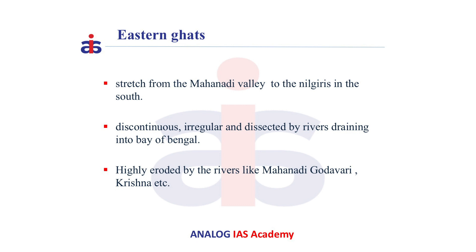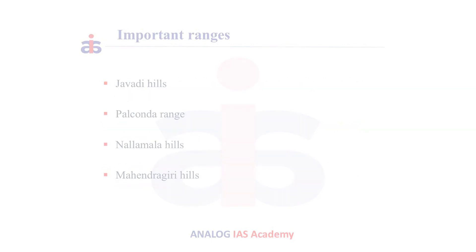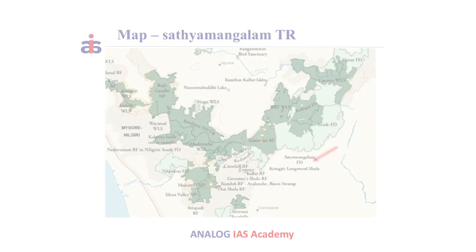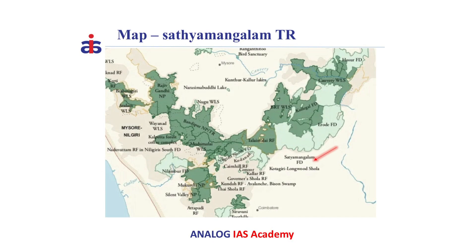Eastern Ghats are highly eroded by rivers like Mahanadi, Godavari and Krishna. Some of the important ranges of Eastern Ghats are Javadi Hills, Palakonda Range, Nallamalla Hills and Mahendragiri Hills. Mahendragiri Hills is the highest peak in the Eastern Ghats.